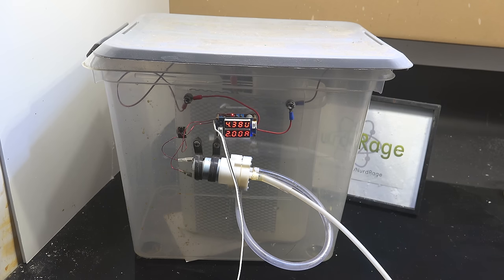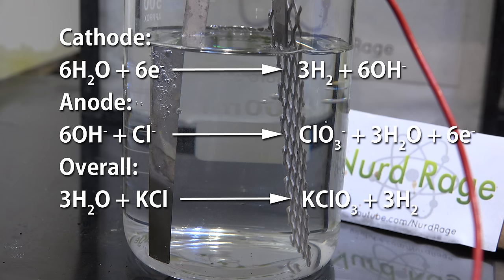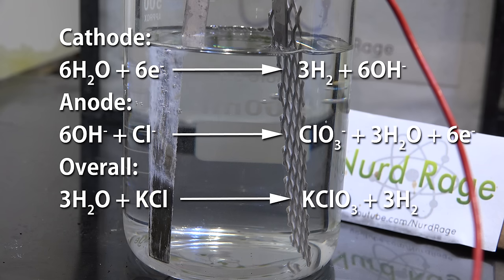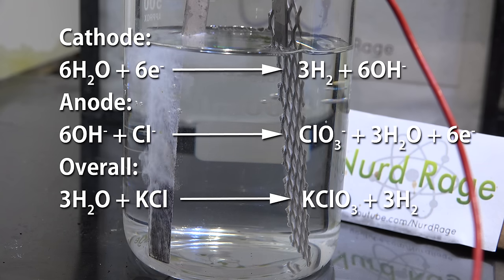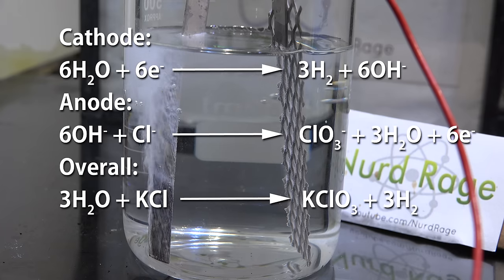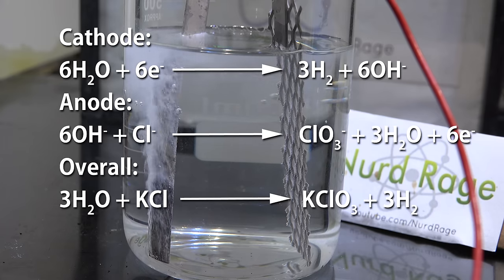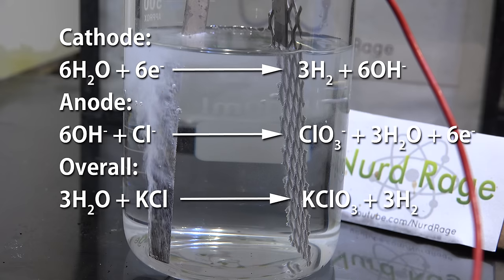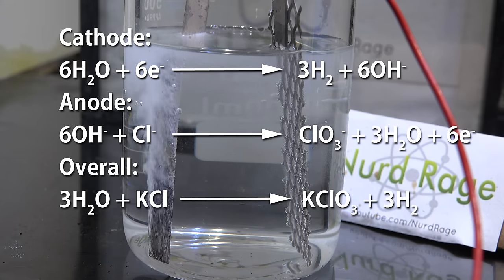At this point we should go over the reactions. Now ideally when this runs it should electrolyze the solution and generate hydrogen gas at the cathode and chlorate at the anode. Overall we're making potassium chlorate. We should expect to move 6 moles of electrons for every 1 mole of potassium chlorate produced. In practice though this is not quite that efficient.